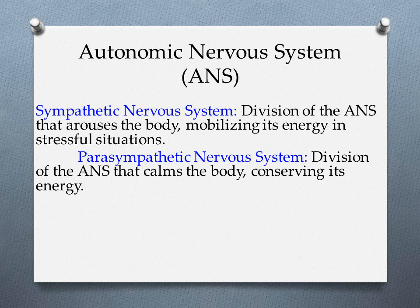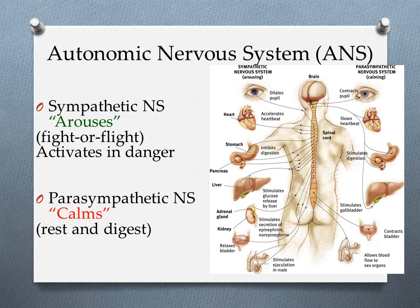The sympathetic nervous system arouses the body and mobilizes energy in stressful situations — this is the fight-or-flight response, activated when you're in danger. It causes pupils to dilate, heartbeat to accelerate, digestion to pause (conserving energy for the heart), stimulates glucose release from the liver, and the adrenal glands release epinephrine and norepinephrine. It also relaxes the bladder.